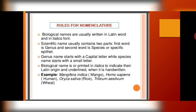For example, if you are writing Mangifera indica — M capital, i small — one line under Mangifera and another line under indica. Mangifera indica is the scientific name of mango. Homo sapiens for human beings. Oryza sativa for rice. Triticum aestivum for wheat.